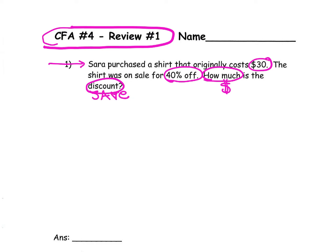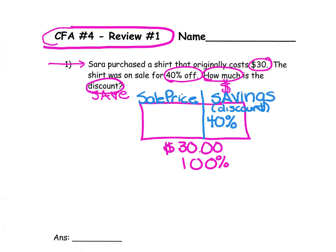Let's start by drawing a tape diagram. Draw a detailed tape diagram with the $30 total at the bottom. Savings is at a rate of 40%, and sale price is the other side of the tape diagram, but it's not even needed. Remember, we want to know how much was saved in dollars, so we're going to use the rate of 0.40.